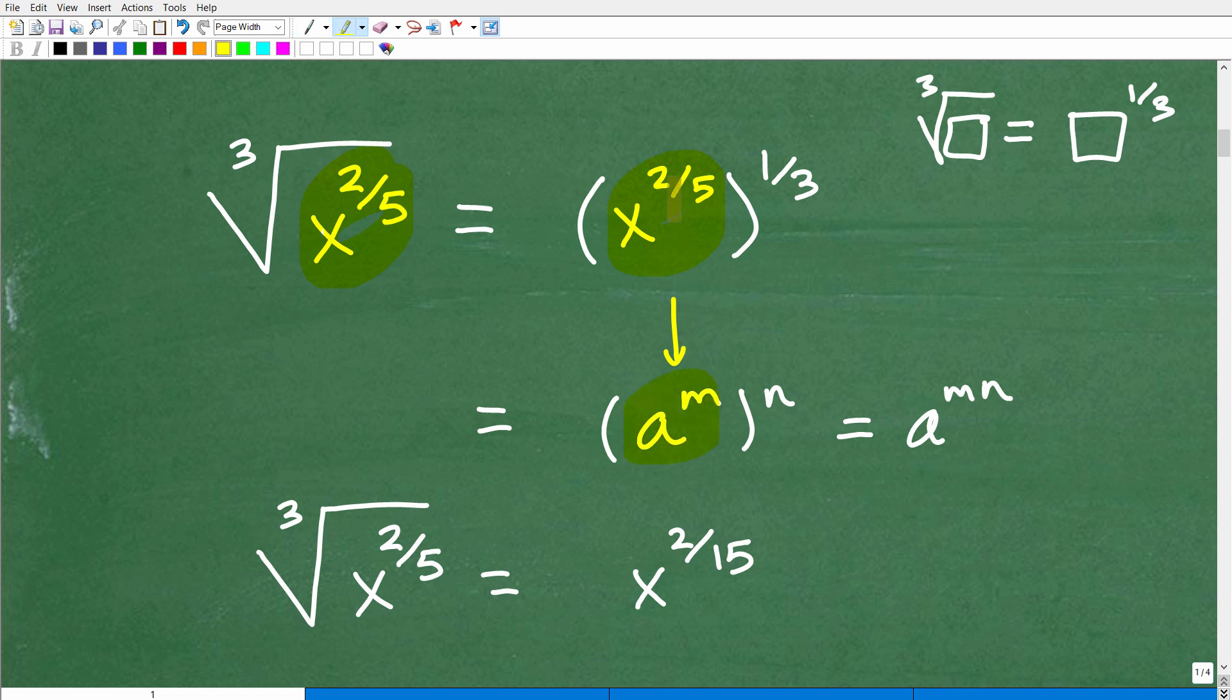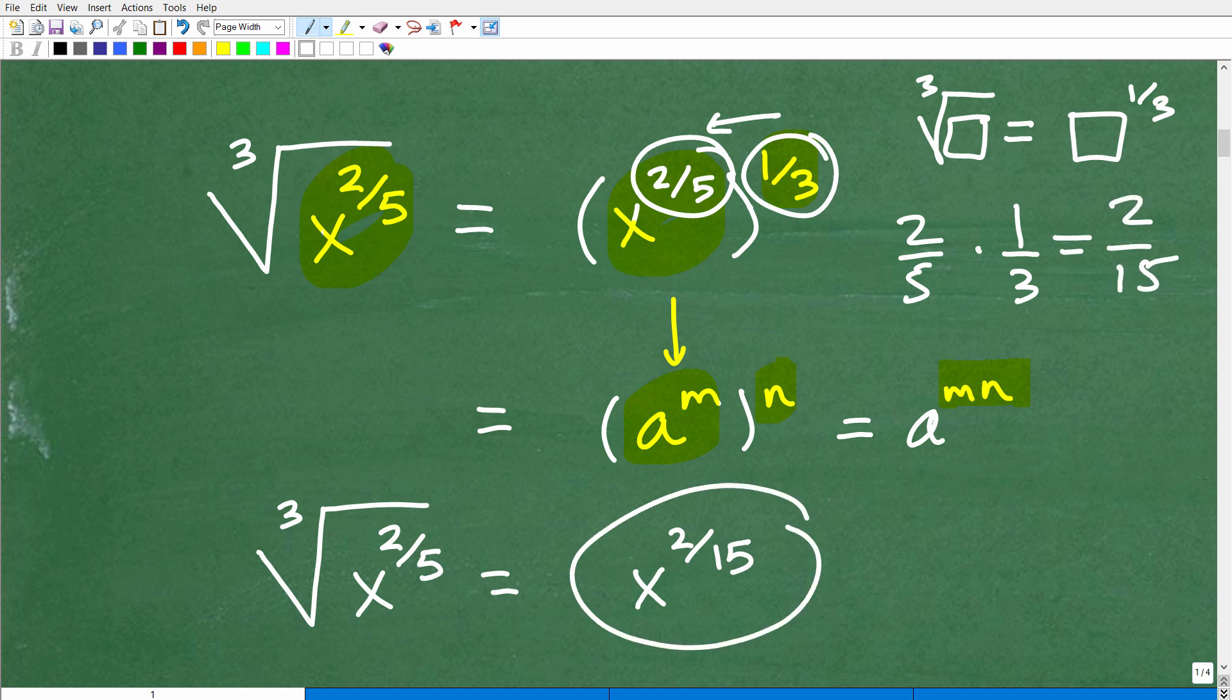And now we have an inside power. We're raising that to an outside power like this. Okay, so how does that work? Well, remember, a to the m to the n is equal to a to the m times n. We're just simply going to multiply this outside exponent to this inside exponent. So one third times two fifths. I know that you're up to speed on your fraction multiplication. So this is going to be what? Two over 15. So this whole thing is equal to x to the two over 15th power. So that's what this is equal to.